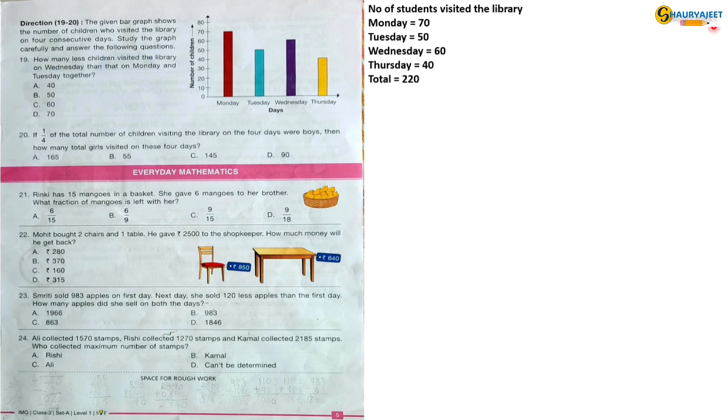Question 19: How many less children visited the library on Wednesday than that on Monday and Tuesday together? Monday and Tuesday students combined is equal to 120 students. So 120 students minus the students which came on Wednesday to the library is equal to 60 less students. So the correct option is option C, 60.